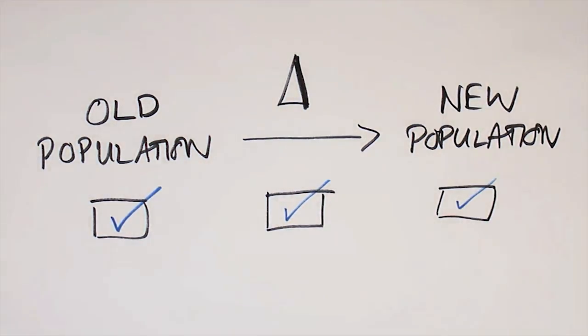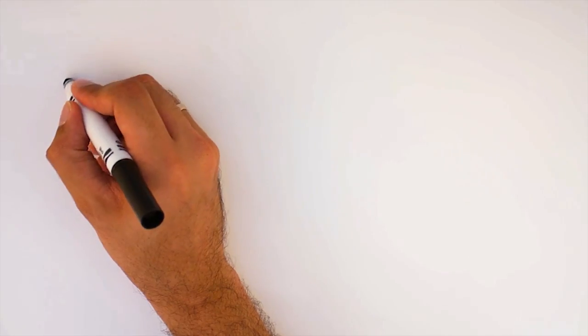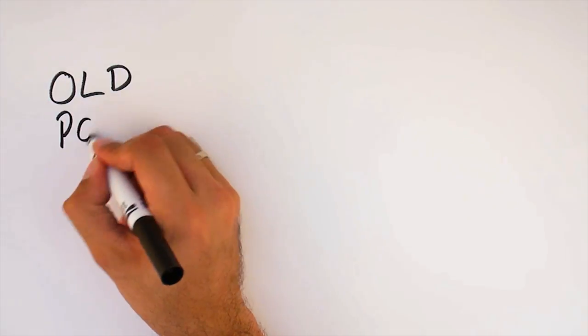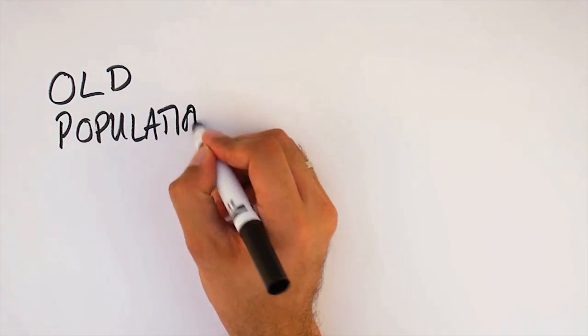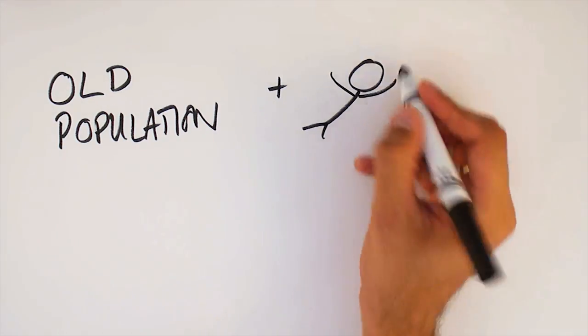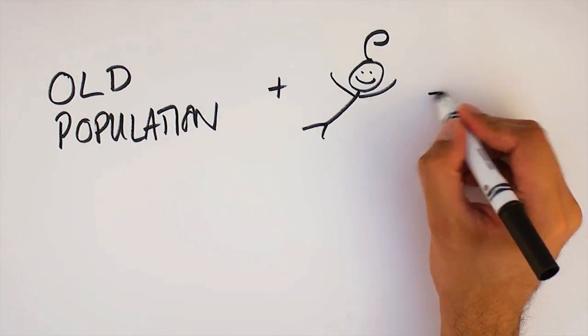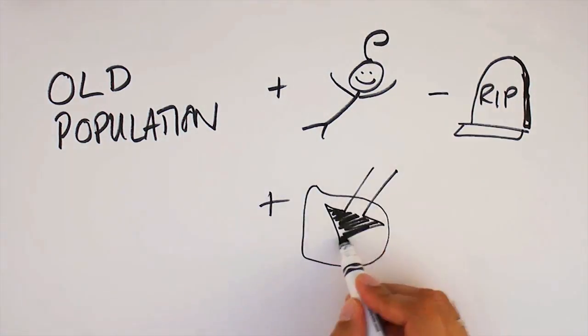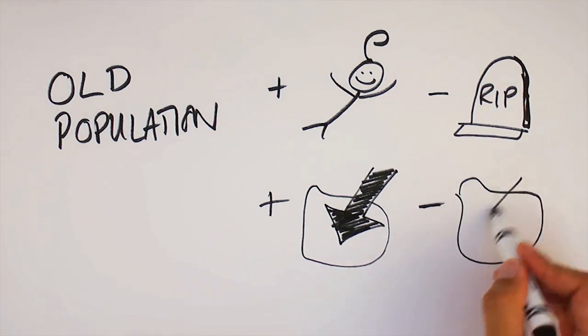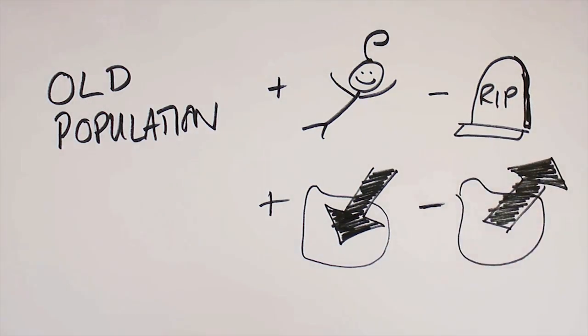Let's suppose we want to know a country's current population, but we only have data from five years ago. To estimate the population now, we take the old population, calculate the births and add them, calculate the deaths and subtract them, add all the immigrants, and then subtract all the emigrants. If we have these numbers and they're reliable, our estimate should be good.